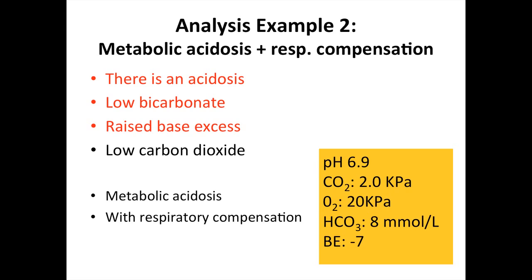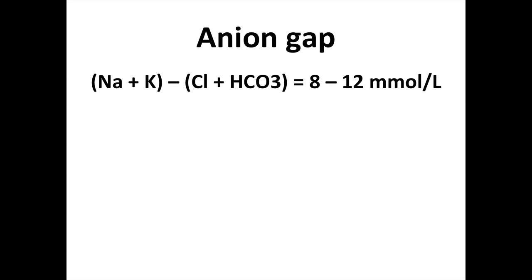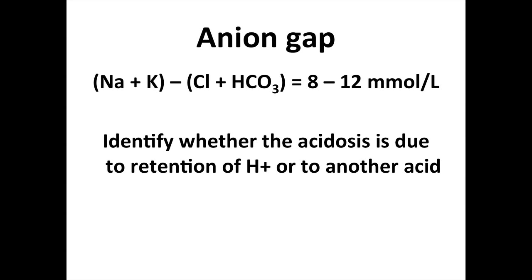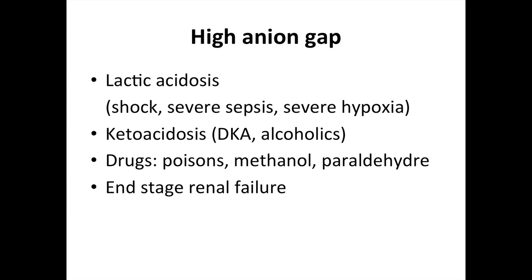This is metabolic acidosis with respiratory compensation. The raised base excess indicates that an increased amount of base is required to neutralise the acid. Causes of metabolic acidosis include diabetic ketoacidosis, lactic acid from shock and sepsis, or renal failure. Some may ask you to calculate the anion gap. It is used to identify whether the acidosis is due to retention of hydrogen ions or another acid. A high anion gap indicates unmeasured anions are increased — present in lactic acidosis, ketoacidosis, drugs such as methanol or paraldehyde, or end-stage renal failure.